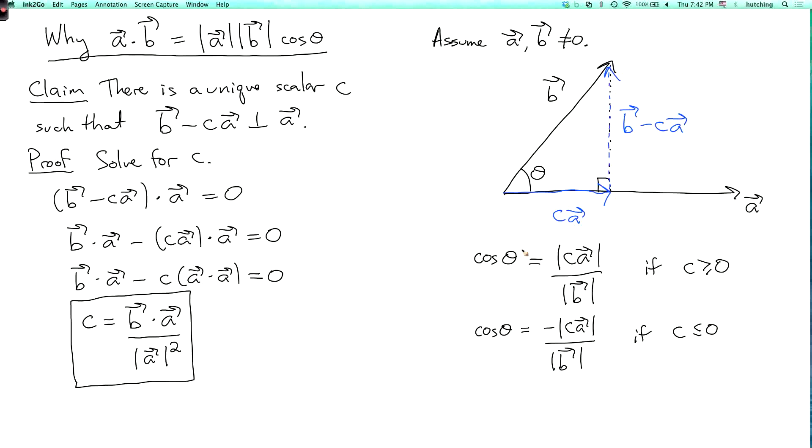And we can combine these two equations into one equation by writing it like this. We can write cosine of theta equals c times the length of a over the length of b. And this is true both when c is positive and when c is negative.